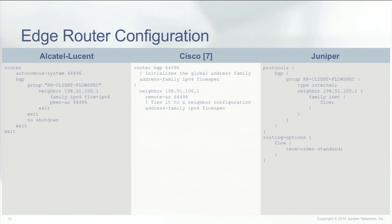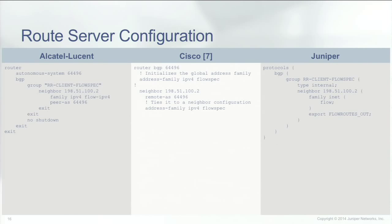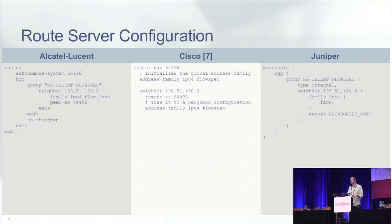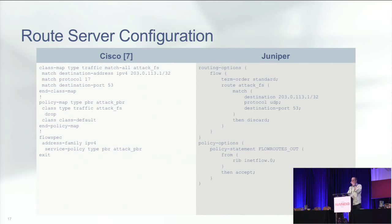The edge router config looks exactly the same as before. On the route server, we also enable the NLRI for BGP flow spec. As far as I'm aware, Alcatel's current code doesn't allow you to create flow spec routes to use as a route server, but I could be mistaken. I found Cisco's config and Juniper's config on how you create the route — essentially we're creating a flow spec type route and injecting it into BGP, advertising it from the route server out to our edge routers. This could be done through some sort of automation tool, a web portal, or a NOC engineer doing it manually.